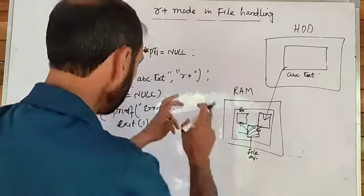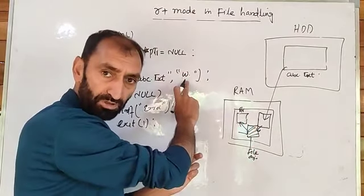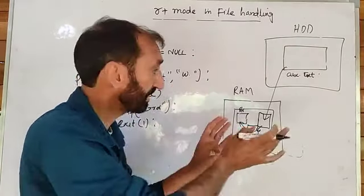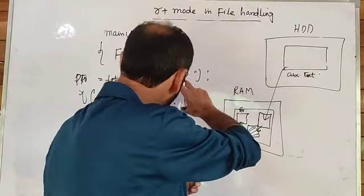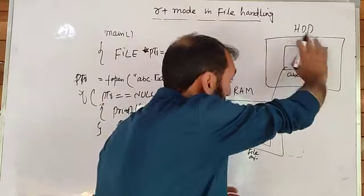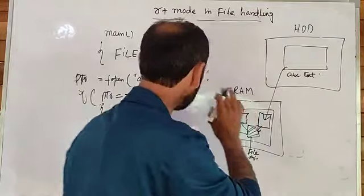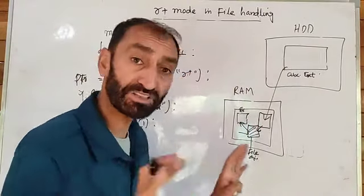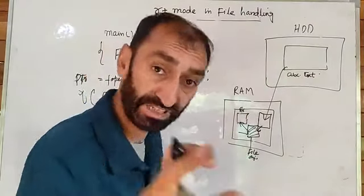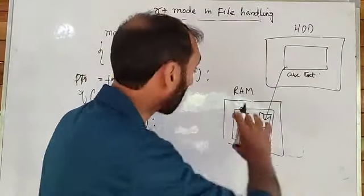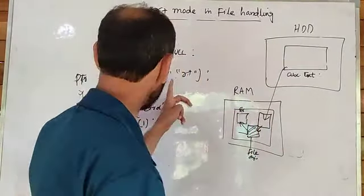If you recall, if we open this file in W mode — in R mode — and the file does not exist, R mode first creates the file, then loads a copy of it into the main memory. But in case of R plus mode, it does not create a new file. R plus mode does not create a new file — it only opens and loads the existing file into the main memory.